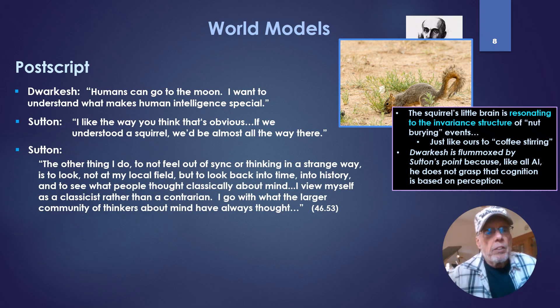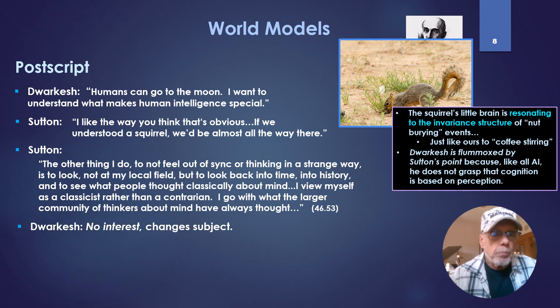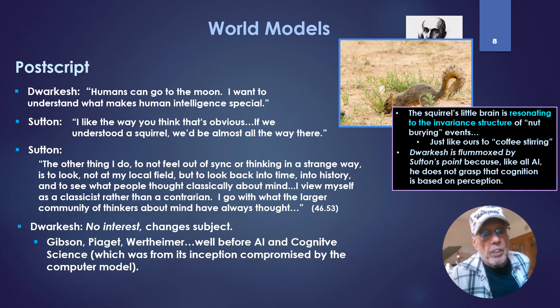Another point. Sutton says, The other thing I do, to not feel out of sync or thinking in a strange way, is to look, not at my local field, but to look back into time, into history, and to see what people thought classically about mind. I view myself as a classicist rather than a contrarian. I go with what the larger community of thinkers about mind have always thought. Dwarkesh has no interest in an obvious follow-up question. What thinkers? Changes the subject. But Gibson, Wertheimer, Piaget, many others were well before AI and cognitive science, which, in my experience, was from its inception compromised by the computer model, so it offers no help to AI. These earlier classic thinkers were, well, they've got a wealth of information there, and AI doesn't know that they should look there.